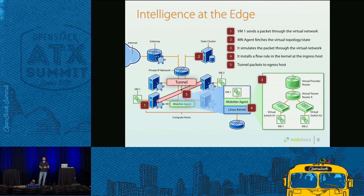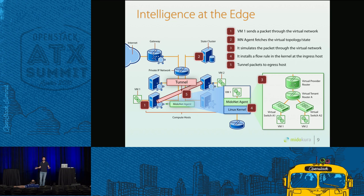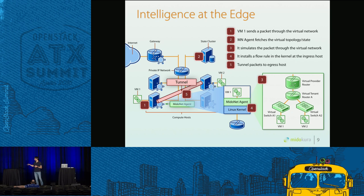The key difference that distinguishes MidoNet is that we push the intelligence to the edge with the MidoNet agent. By converting higher-level Neutron models into our own MidoNet models stored in a southbound database, MidoNet agents can download these enriched models and apply their own logic to make packet processing as distributed as possible. For example, if a VM on one compute sends a packet to a different compute, the MidoNet agent at the ingress host applies whatever transformation is needed — simulating the packet flowing through the virtual topology — and after simulation the modified packet is simply tunneled to the egress host.